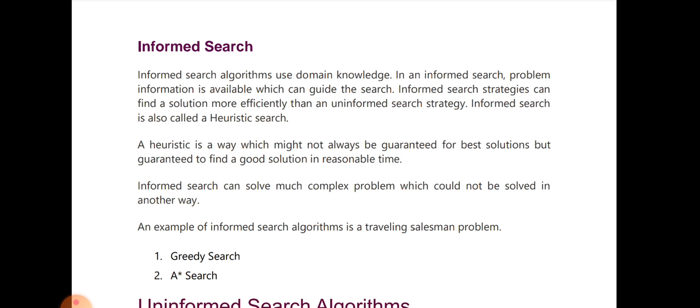That's the reason why we use heuristic search. A heuristic is a way which might not always guarantee the best solution, but guarantees to find a good solution in reasonable time. We need to find a greedy search for informed search. For example, a traveling salesman problem — we are learning the algorithm for the shortest path.